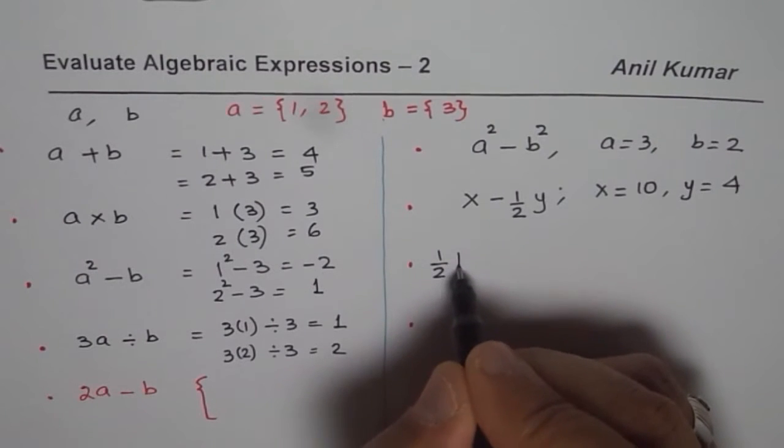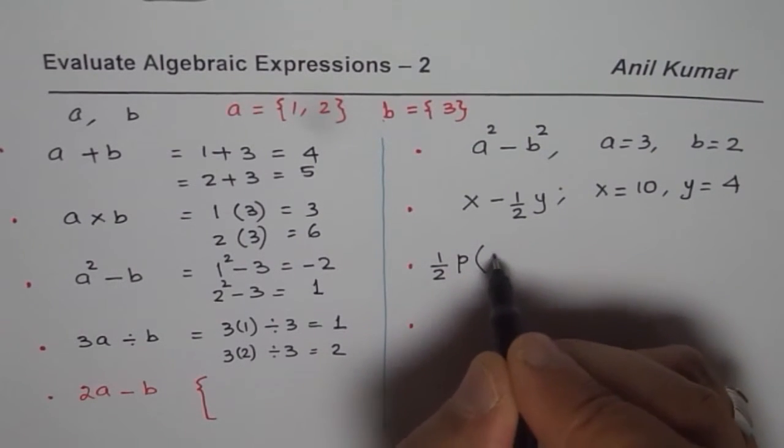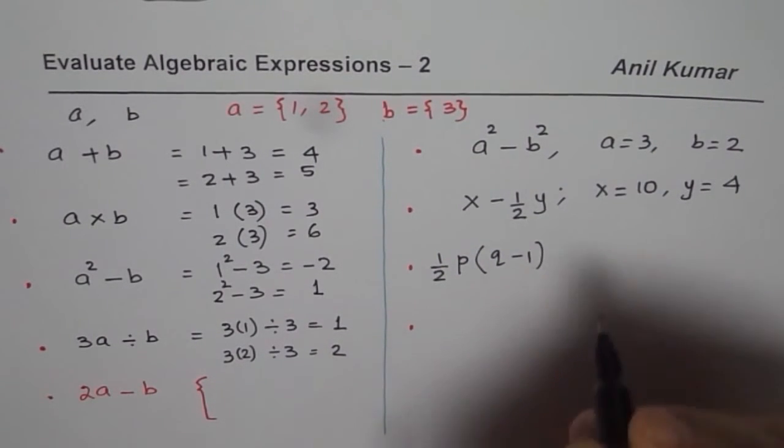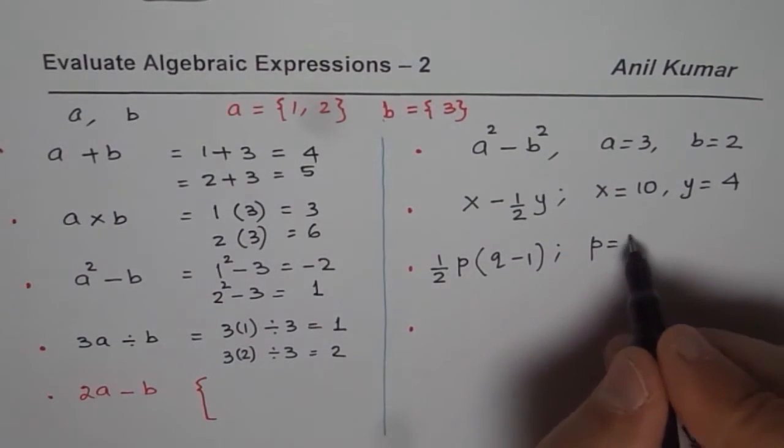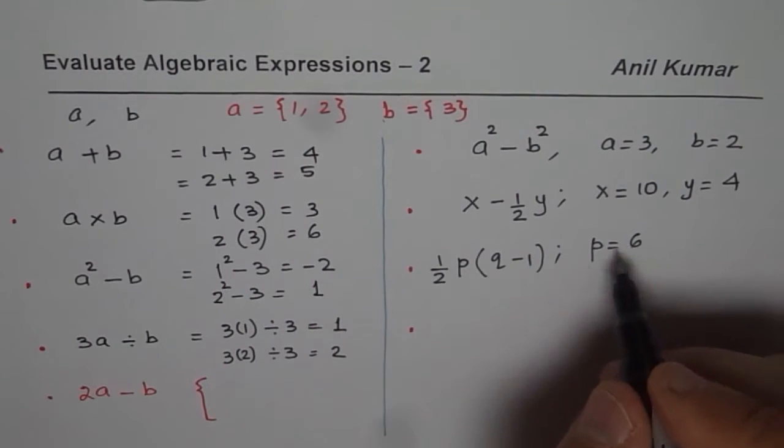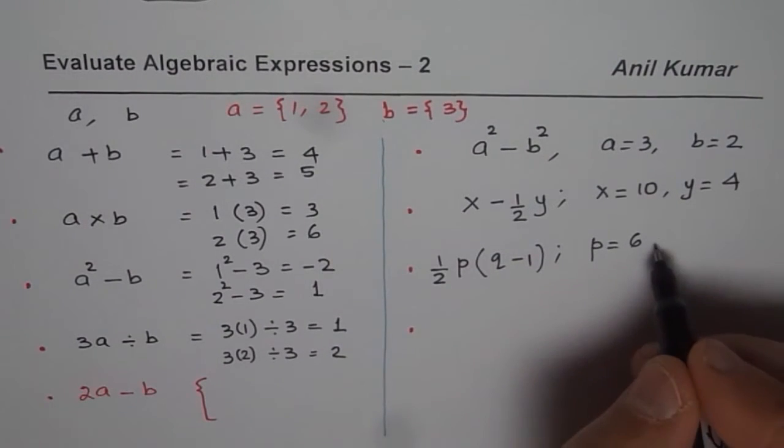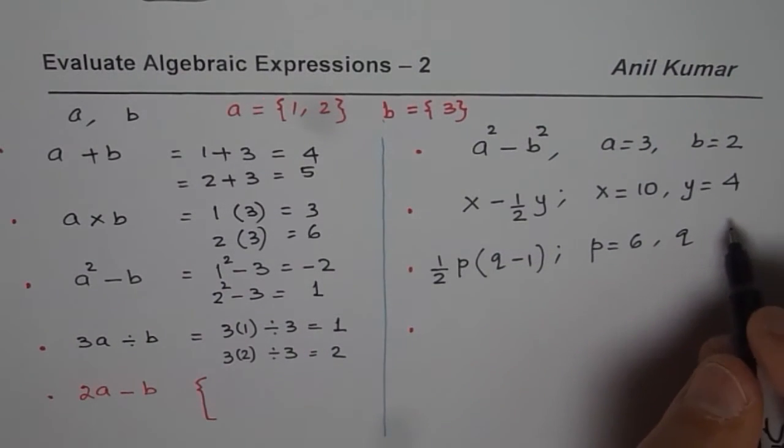Half of P times Q minus 1. Now in this case, I will give you P as some even number, let us say 6, so that you do not land into fractions. And I will give you Q as, let us say, 3.